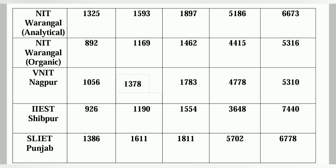IITs had around 600 rank cutoff previously; now IITs get up to 782 rank, meaning this year around 800 rank students may get IIT admission. From 2019 to 2022, there has been around 200 rank increase. As IITs increase seats, NITs also benefit indirectly because more students go to IITs, improving NIT chances for lower-ranked students.